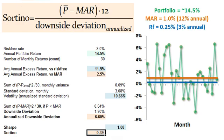That's the generalization of the Sharpe, but focused on the downside. This is David Harper of Bionic Turtle — thanks for your time.